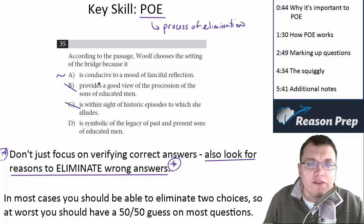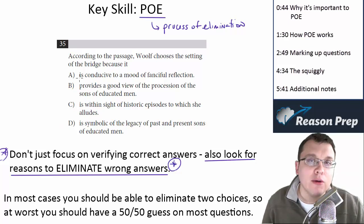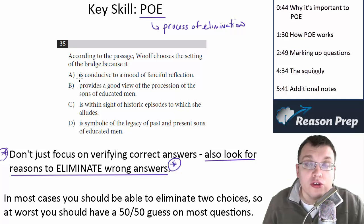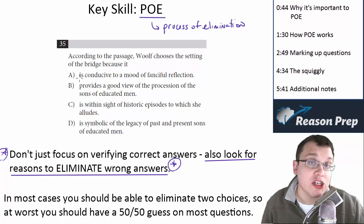So the whole point of POE, process of elimination, is a way for you to evaluate the choices in a rational way. So that you're not jumping to conclusions, you're not picking the first choice that you see, and you are effectively giving each choice the best shot it can get.